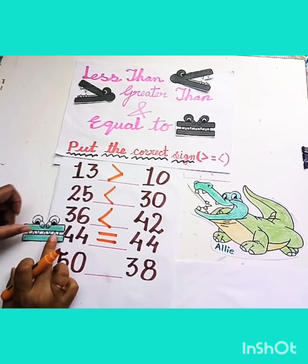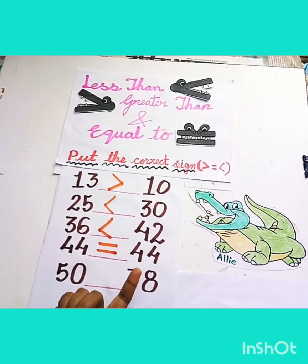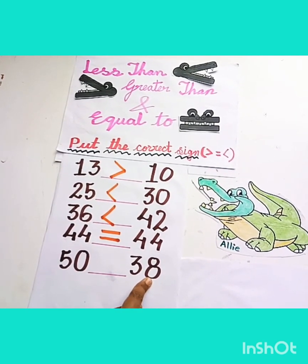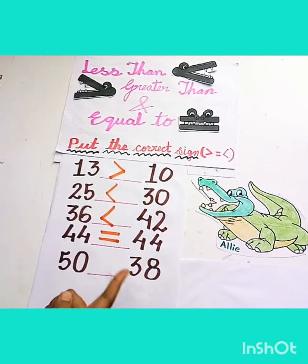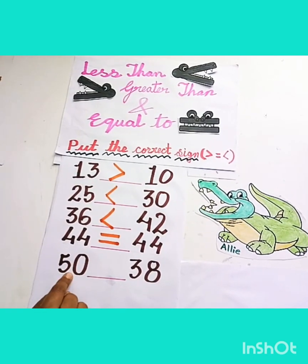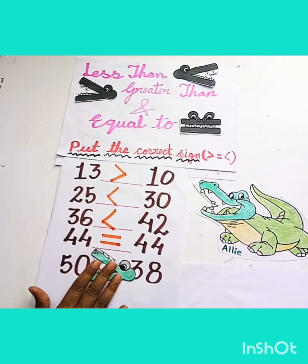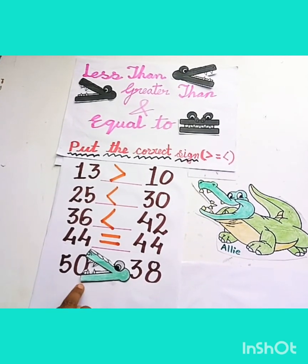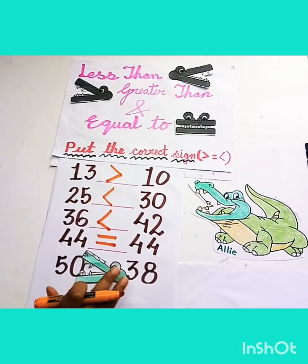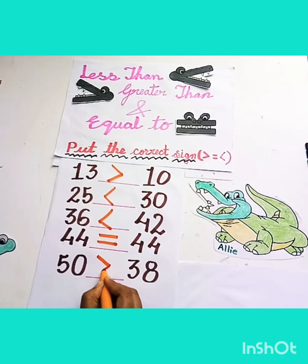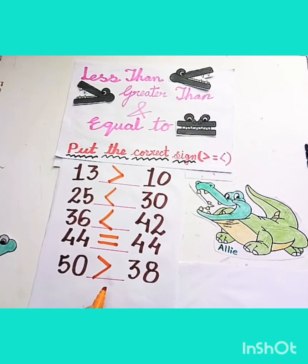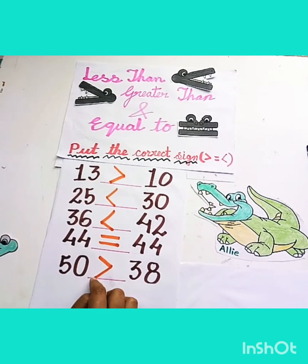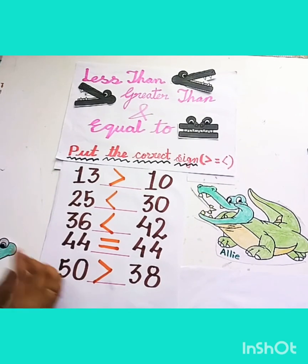Just like Ellie's mouth. Now, tell me children, which number will Ellie eat? Number 50 or number 38? That's right — Ellie will eat number 50. Like this. Because 50 is bigger than 38. For the greater than sign, we use this sign. In this greater than sign, this side is wide open. Remember children, the open end goes to the bigger number, like Ellie's mouth.